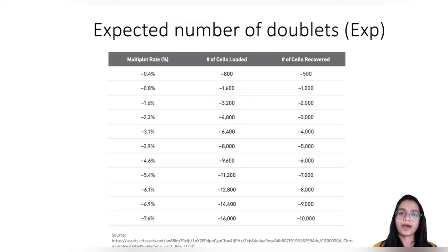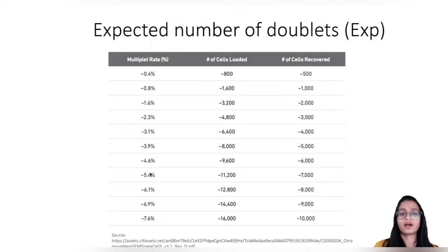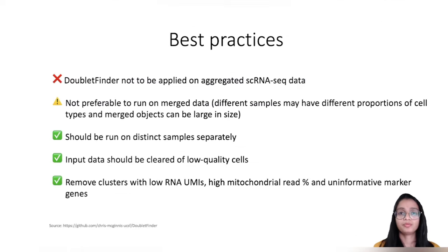The third parameter is the expected number of real doublets. We can get this information from the user guide of reagent kits from 10x Genomics. Depending on the total number of cells loaded and cells recovered, we get the expected percentage of doublets. If we don't have information for total cells loaded, we can use the percentage corresponding to the total cells recovered.